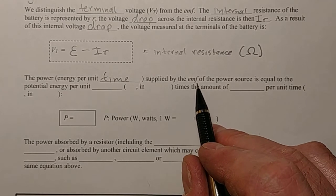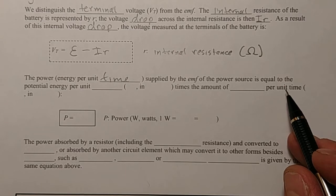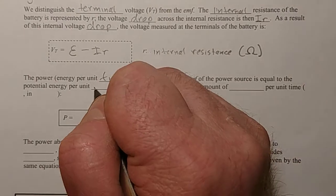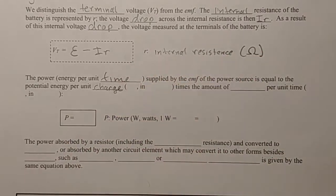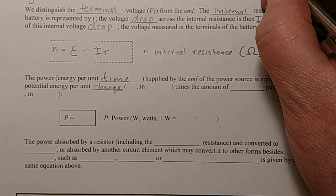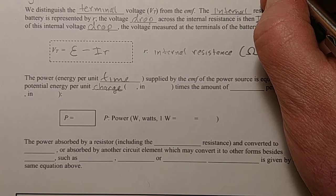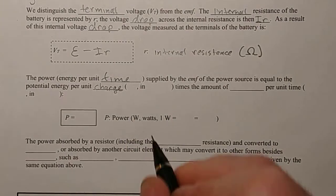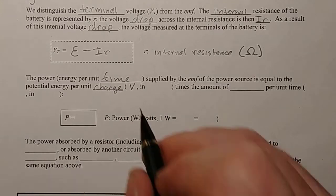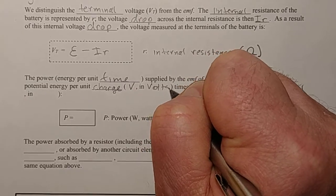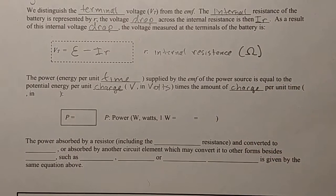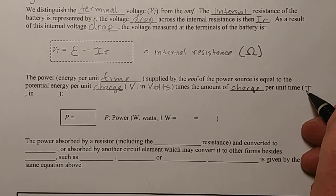And it is supplied by the EMF, that's where the power comes from, to the power source, of the power source, is equal to the potential energy per unit charge. So we can think of charges that come out of the positive side as having a certain amount of potential energy, just like something that's raised a certain distance above the ground, has a certain amount of potential energy. And so the potential energy per unit charge is in volts, right? That's what voltage is, potential energy per unit charge. It's the voltage in units of volts, times the amount of charge per unit time. And what is the charge per unit time current in amps?